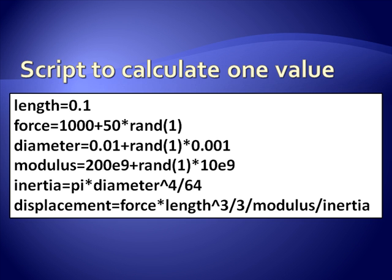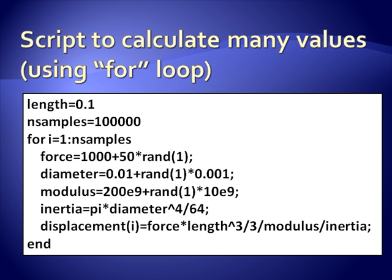So all we have to do is repeat this a bunch of times. So for an old FORTRAN programmer like me, the easiest way to do that is with a for loop. So I decided to do 100,000 samples and I just say for i equals 1 to nsamples. I do what I just did and I just save the displacement as the ith sample.